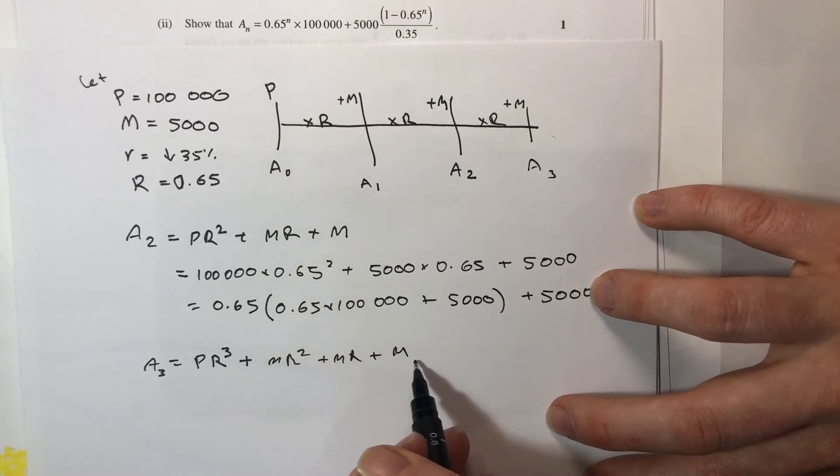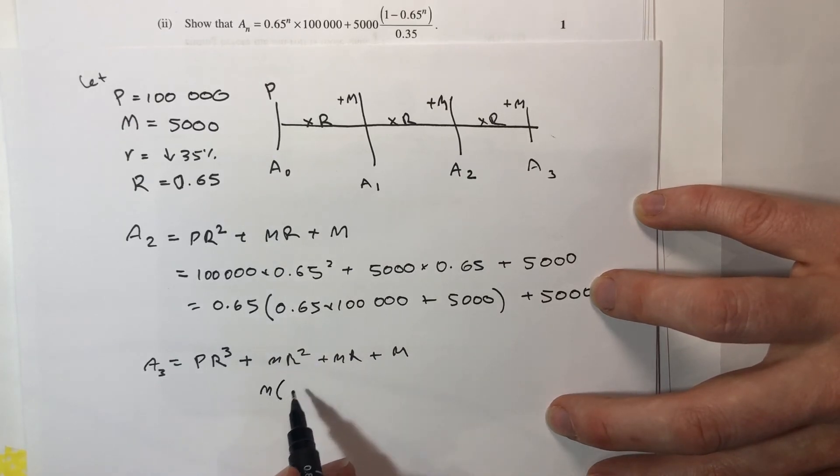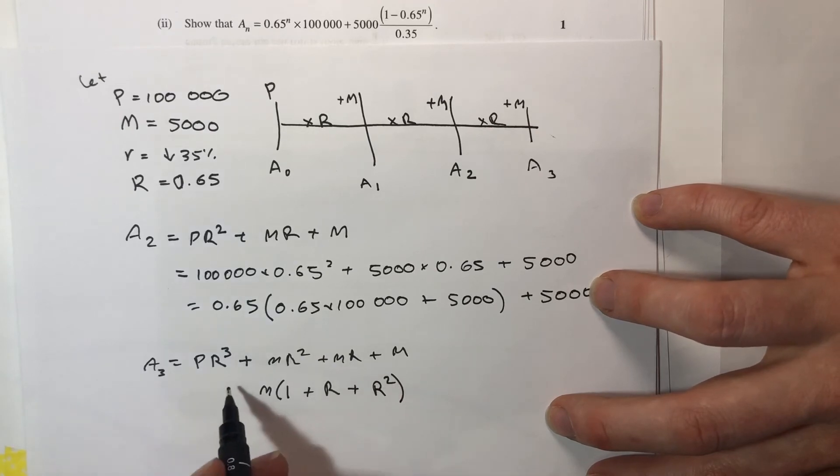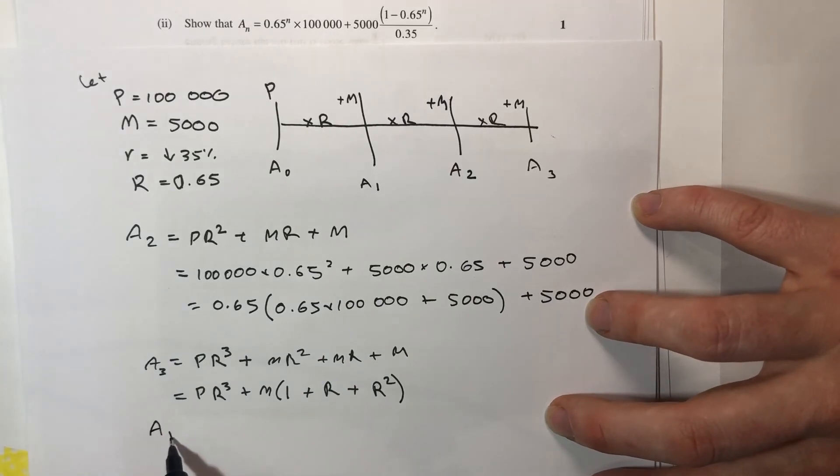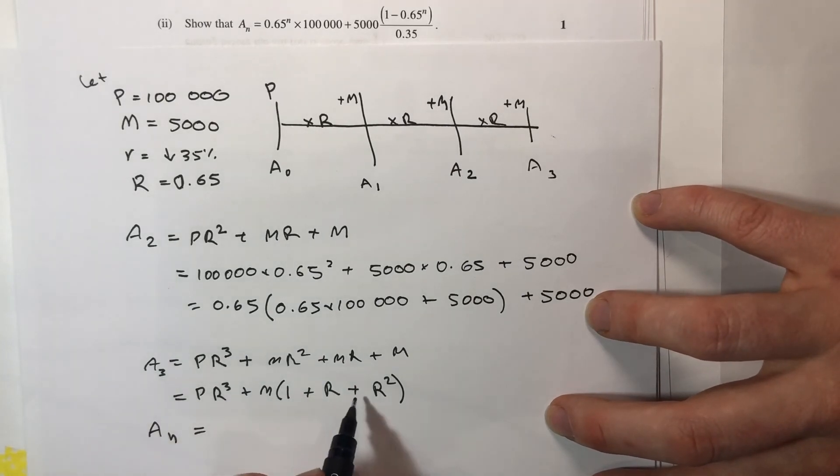Now I want to factorise this bit because this bit is the pattern that I'm seeing and I want to rearrange it. I have one piece, I have R lots of M and I have R squared lots of M, yet I'll keep this out the front. That's my setup to then find AN because you can see how the pattern's formed.